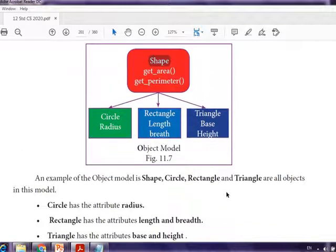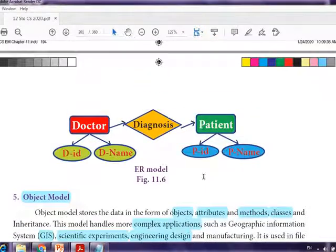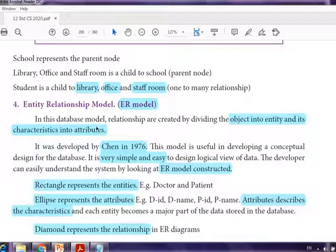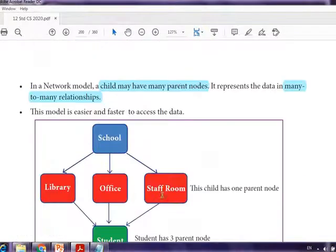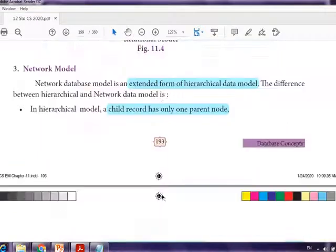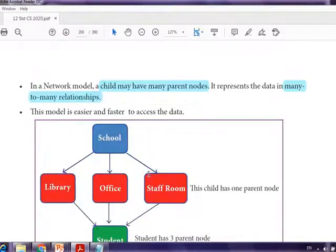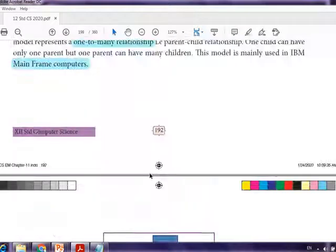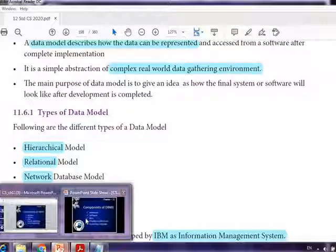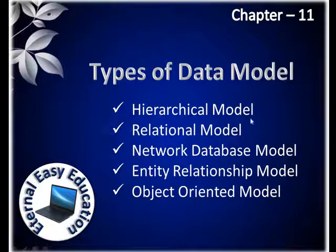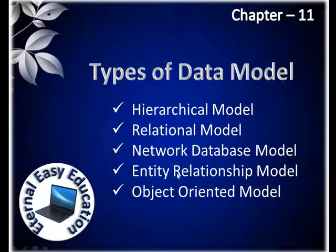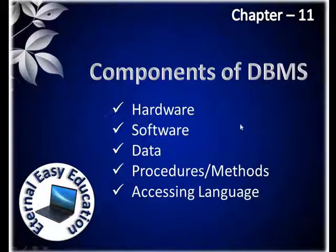We are not going to create the object data model in this syllabus; we are going to see the ER model — how to create the table and form the relationship. Just remember the diagrams; from the diagram itself you can easily recall the points for each data model. There are five data models: hierarchical, relational, network, entity-relationship (ER), and object-oriented model. You have learned the components of DBMS and the types of data models. That's all for this session — learn this well.